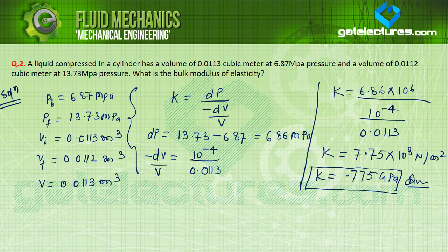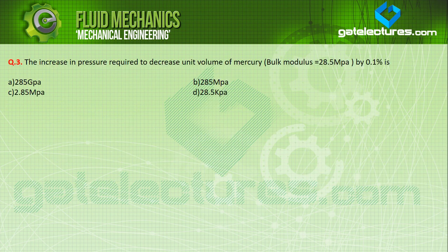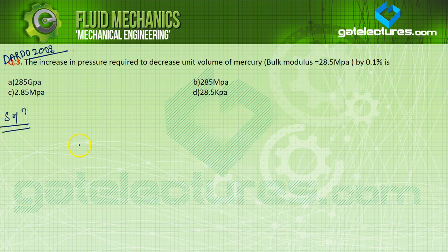This is the second example of compressibility. The first example had minus dV over V given directly; here we computed it from the volume difference. Now let's look at the next example — a question from DRDO 2008. The question asks: the increase in pressure required to decrease the unit volume of mercury by 0.1%, given that the bulk modulus of mercury is 28.5 MPa.